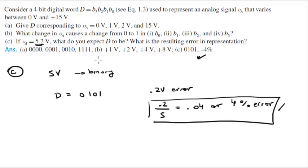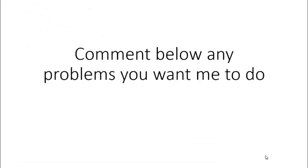So the final answers: for Part C we get D = 0,1,0,1 and 4% error. For Part B we get 1, 2, 4, and 8 volts. And for Part A, 0,1,1,0 and 1,1,1,1, which are all concurrent with the answers given. Please comment below if you want me to do any problems and I will be happy to help. Thank you.